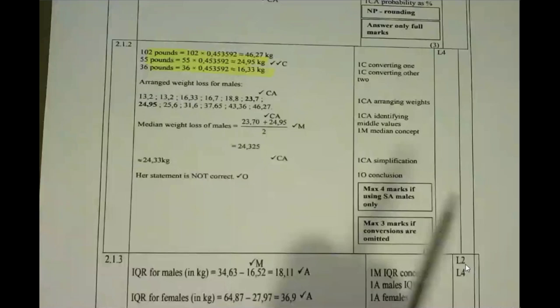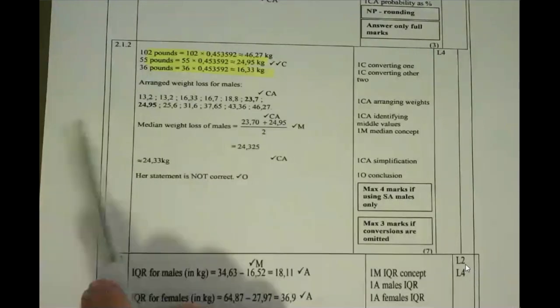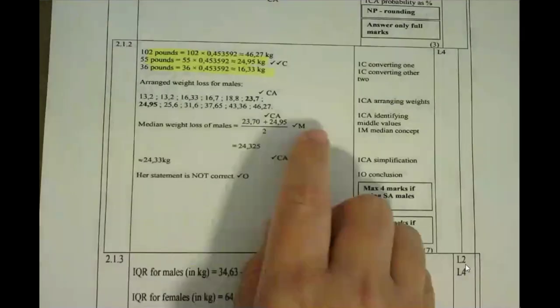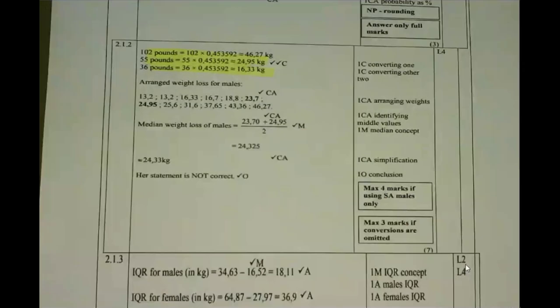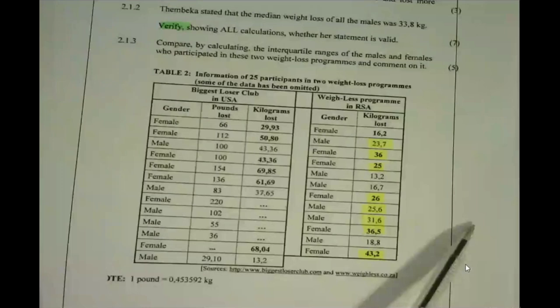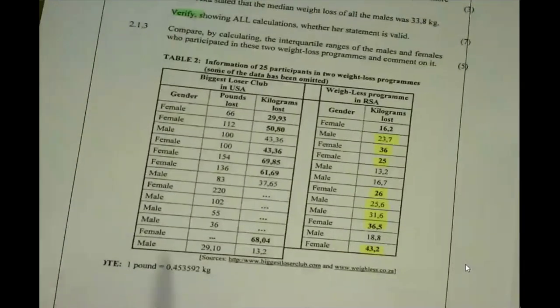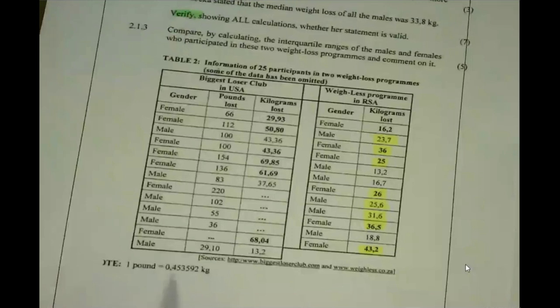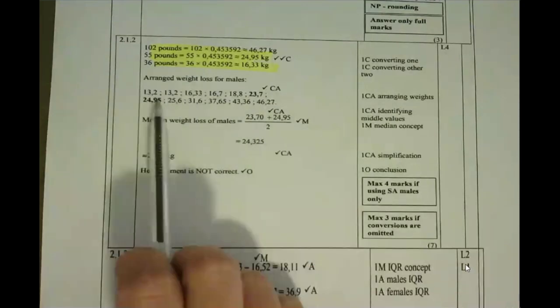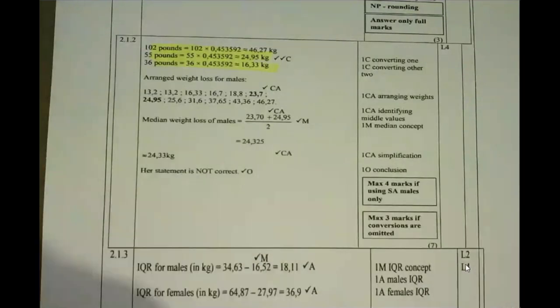For median, we need to arrange the values from the smallest to the biggest value. After arranging them, you can double-check — there are 12 males who entered this competition. So double check: do I have that amount when I've arranged my data? One, two, three... twelve values. Remember, median is arranged from smallest to largest. A lot of learners forget to arrange it, so you're throwing away marks — be very careful of that.